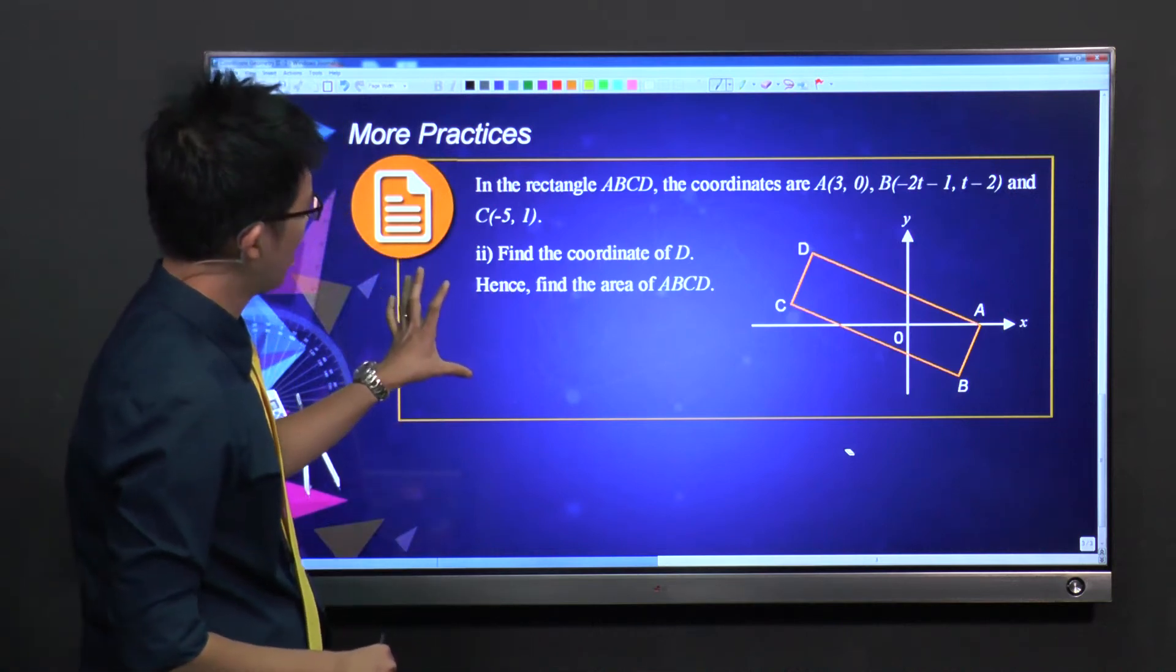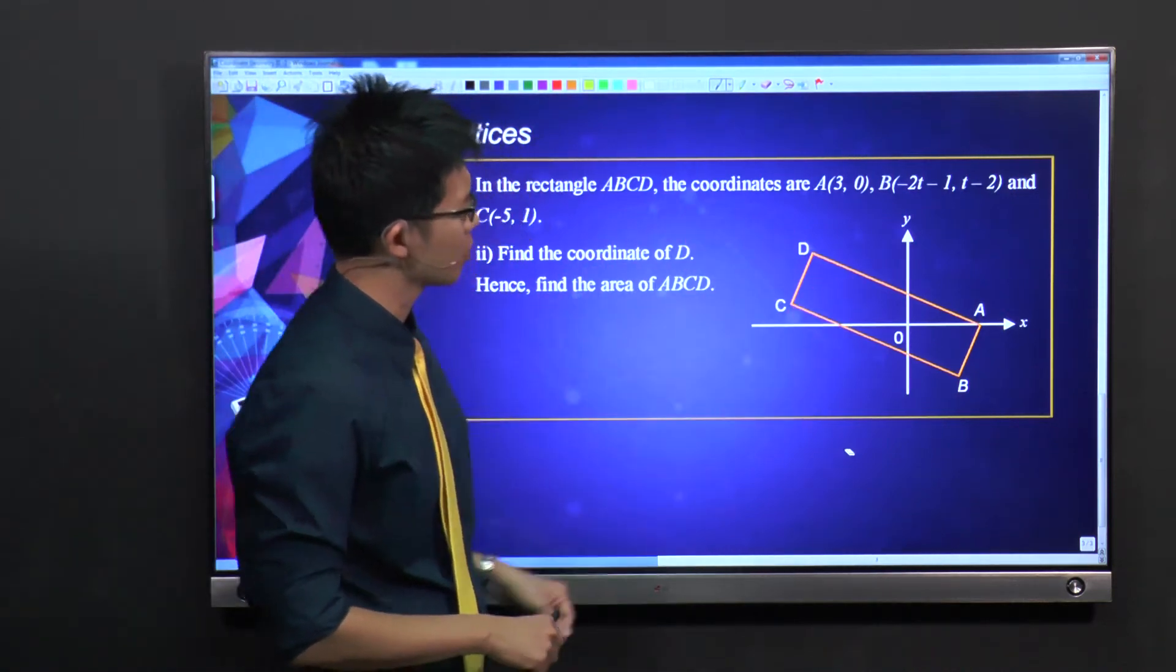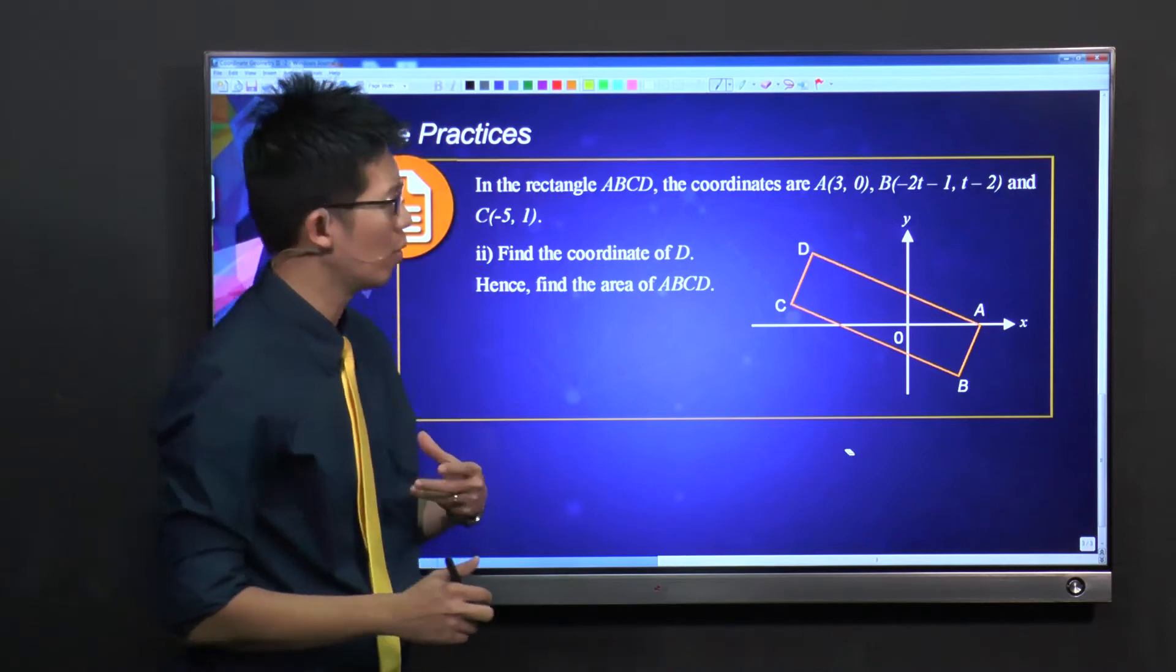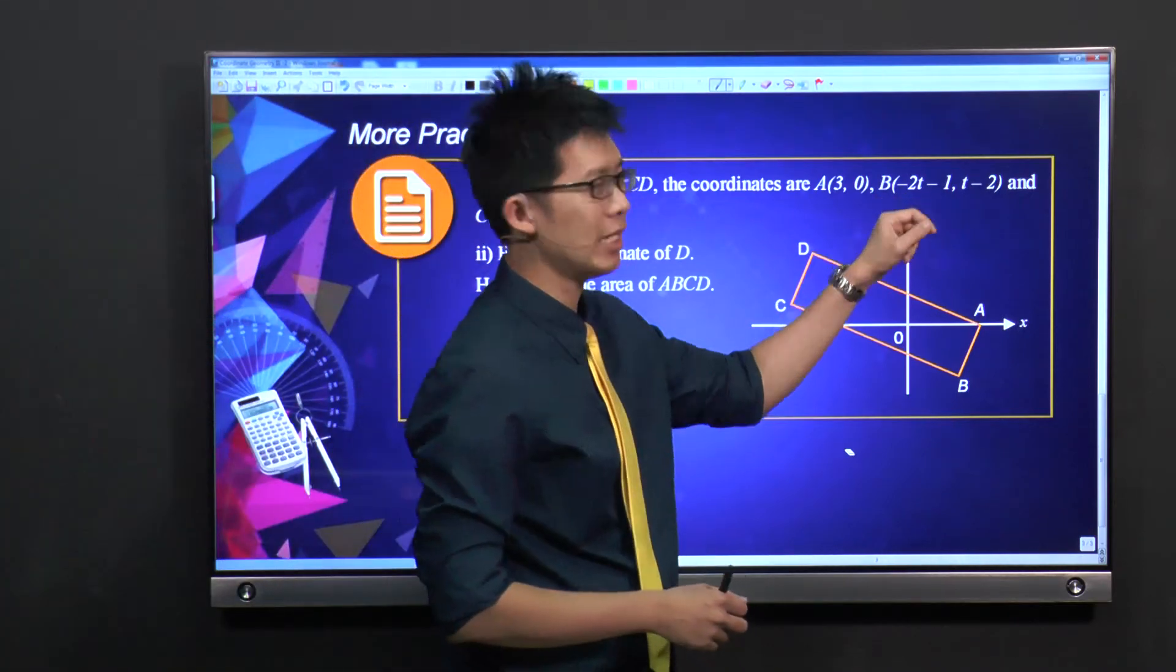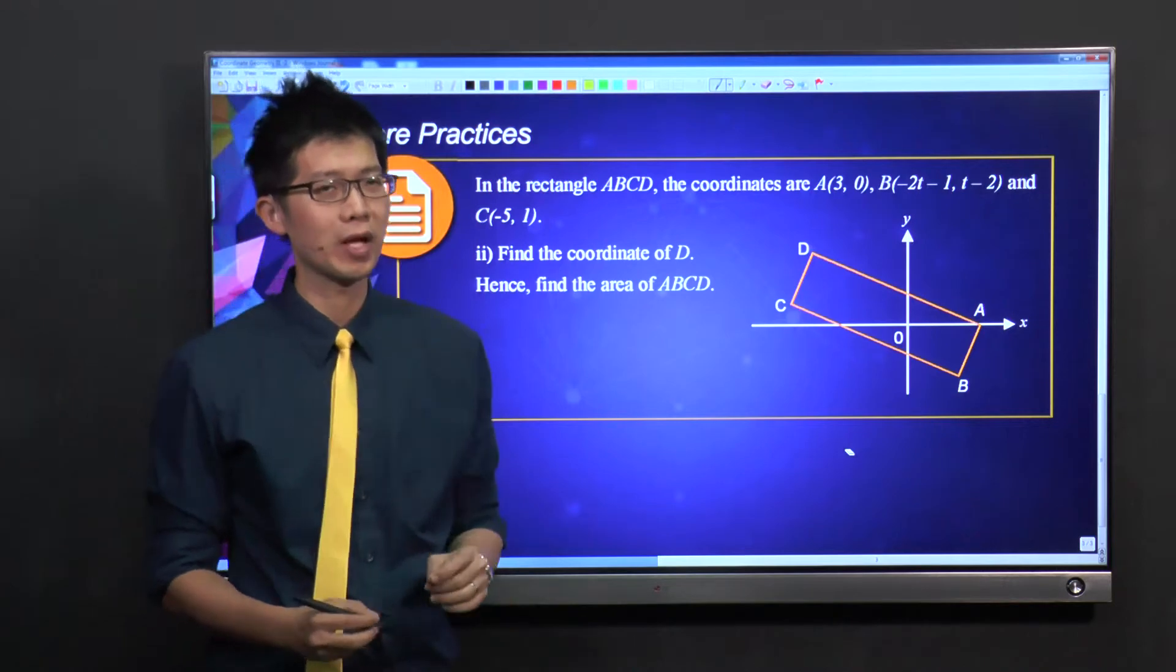In this part, they want us to find the coordinate of D. Bear in mind that we already found that T is actually equal to -1, so we actually have all the coordinates we need now.